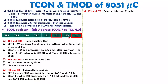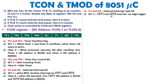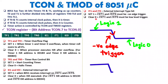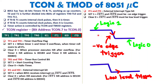Two more bits are IT1 and IT0, which indicate the external interrupt type. If this bit equals 1, the interrupts are negative-edge triggered — meaning when the signal goes from high to low, the interrupt is generated. When this bit is 0, it is level-triggered — a low signal indicates an interrupt.